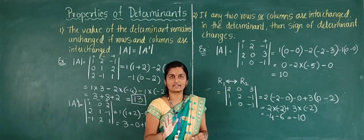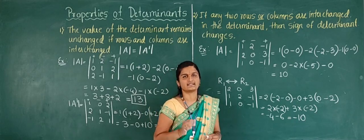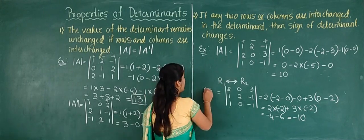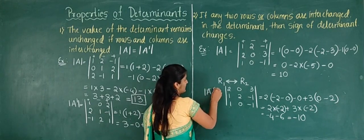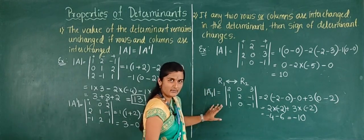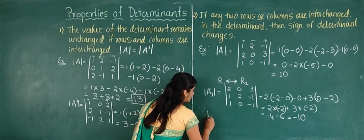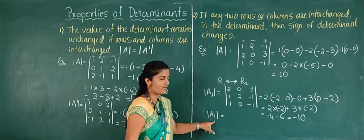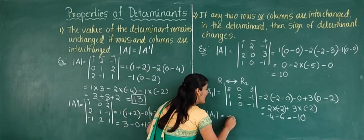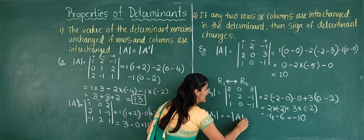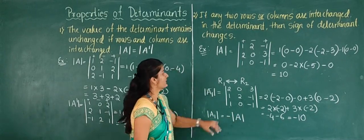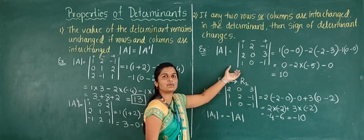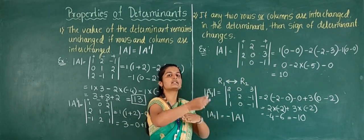The absolute value is the same — only the sign changed from +10 to −10. This confirms the second property: if any two rows or columns of a determinant are interchanged, the sign of the determinant changes.